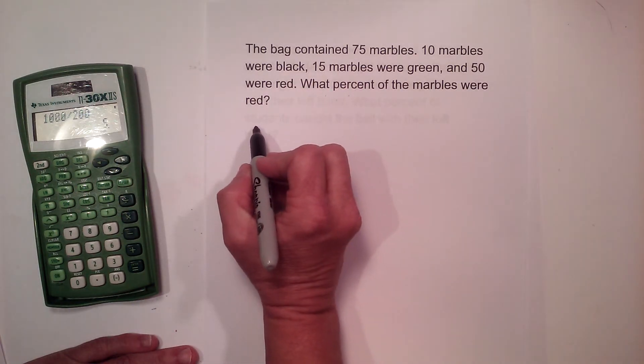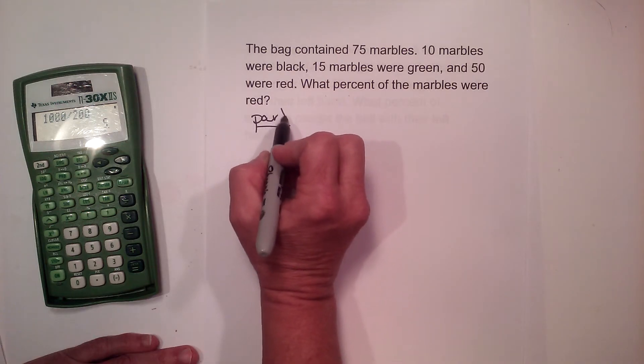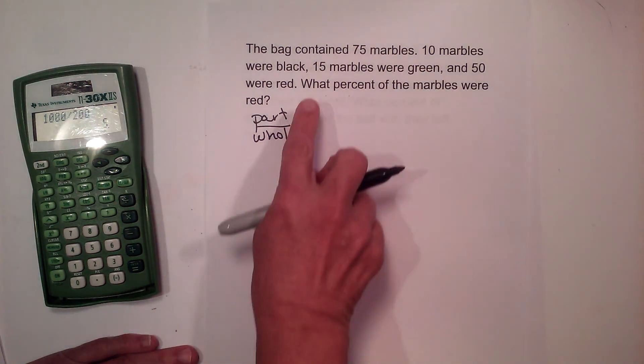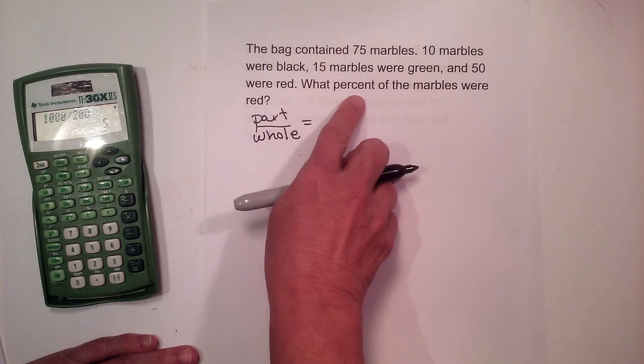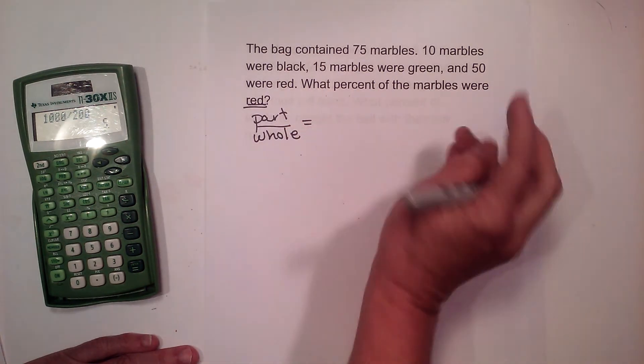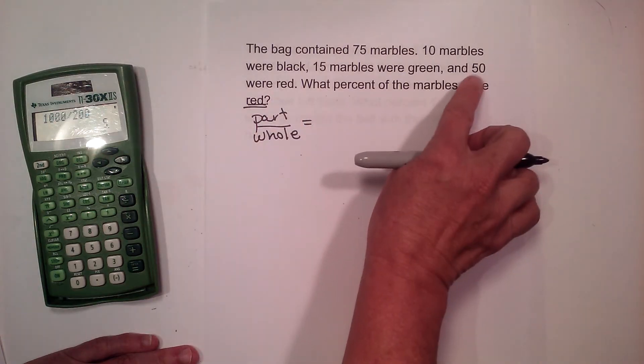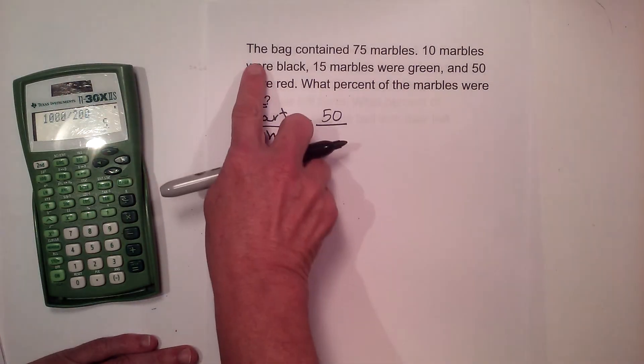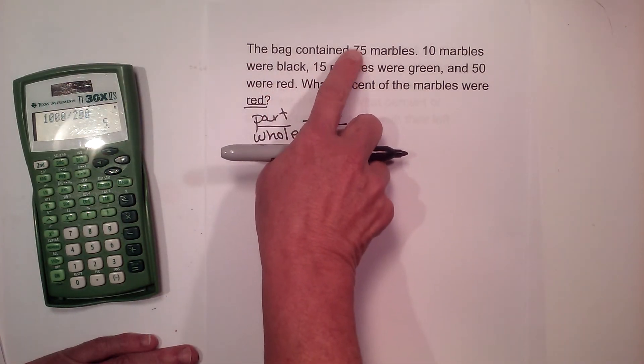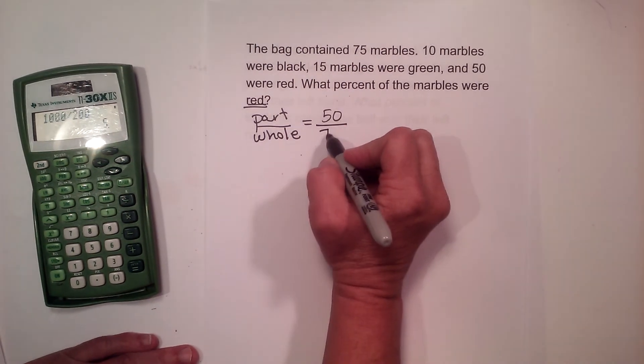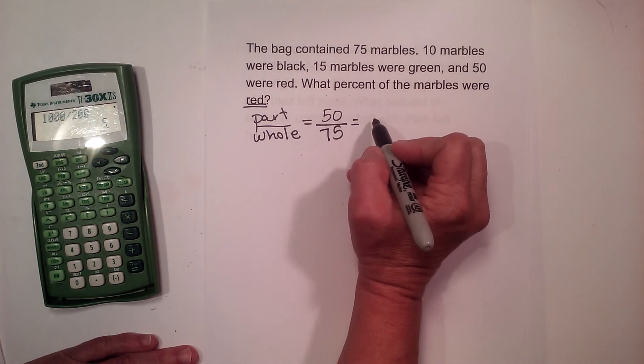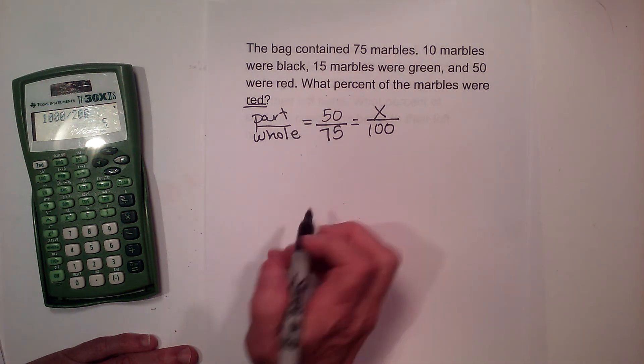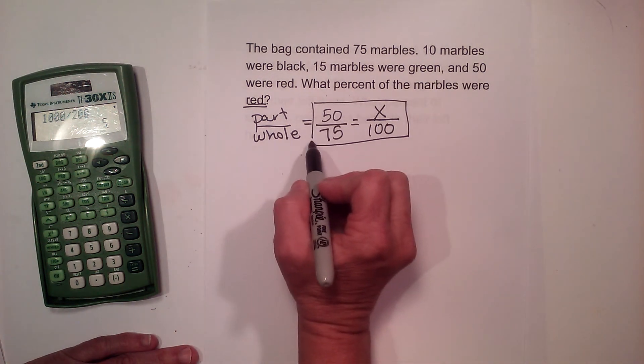Okay so again let's go back to the part over the whole and see if we can figure that out. Well what is the question asking? What percent of the marbles are red? So what are the red marbles? We have 50 that are red, so 50 is my part. And we identified in the very first sentence the bag contains 75 marbles. That means 75 is my whole. And that's going to always equal percent, which we don't know, out of 100. So here is the equation we're working with.